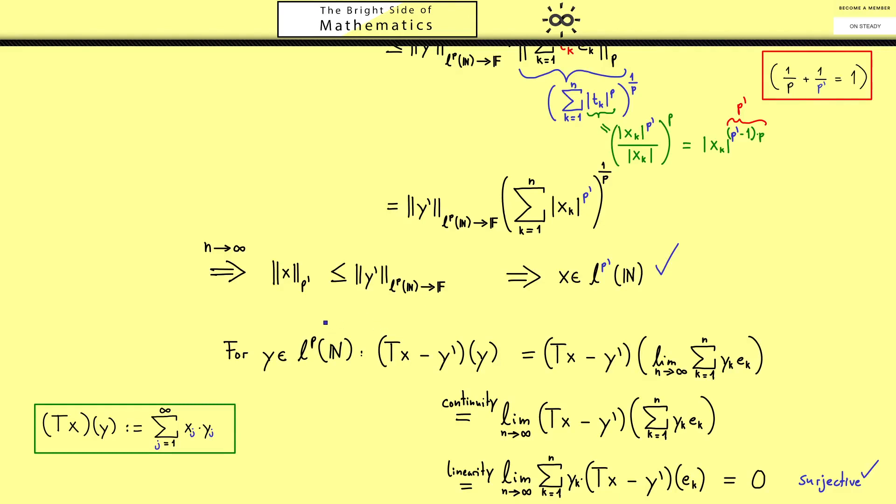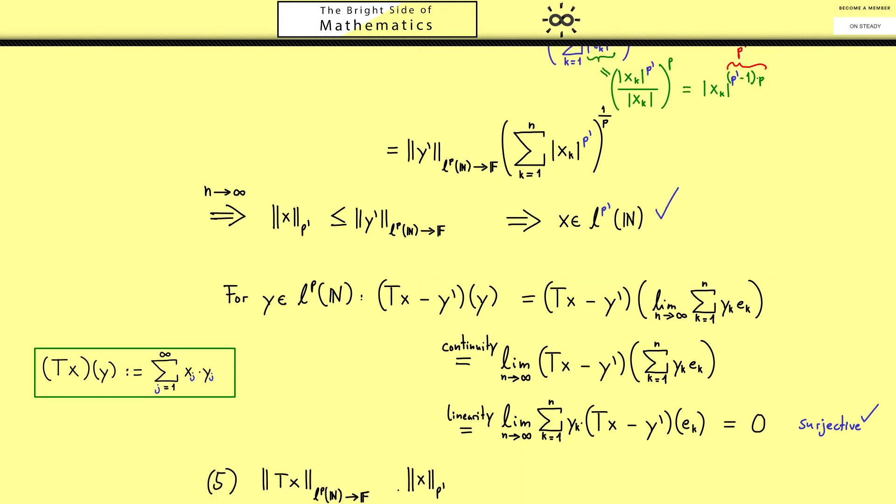Hence only part 5 remains where we want to show that the norm of Tx is the same as the norm of x. Hopefully you still remember part 3. There we have shown that the norm of Tx is less or equal than the norm of x.